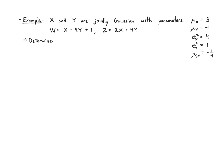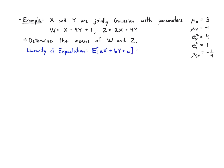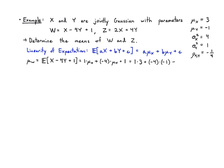What I want to know first is: what are the means of W and Z? The interesting thing is that I don't even need to know that they're jointly Gaussian — I can just use the linearity of expectation formula. I don't need Gaussianity for this to work. So I write out the formula: the expectation of aX plus bY plus c is just a times μx plus b times μy plus c. So for μw, I want the mean of X minus 4Y plus 1: that's 1 times 3 plus minus 4 times minus 1 plus 1, and that's 8.